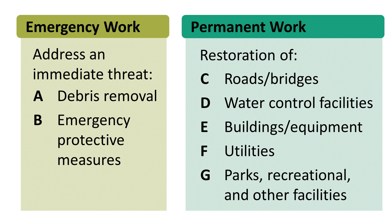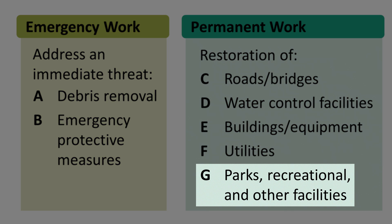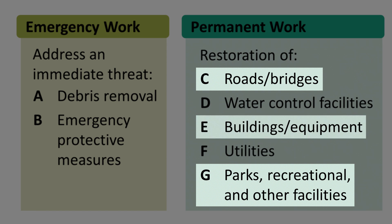Each category of work has its own specific EEI questions and documentation requirements to verify eligibility and substantiate FEMA PA grant funding. A project can include work from multiple categories. For example, your park could be damaged, which is category G. The park could include a road, which would be category C, and a building, which would be category E. You will need to respond to an EEI for each category of work included in the project.